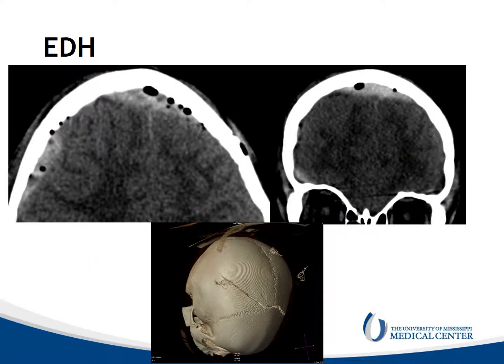This is an epidural hemorrhage. This is a five-year-old who had a fall on his head. We can see that the hemorrhage is somewhat lentiform in shape. We can see that it does cross the falx anteriorly, and it does not cross the coronal suture. Small foci of air are present reflecting pneumocephalus, and there is a linear skull fracture seen on the 3D rendering.